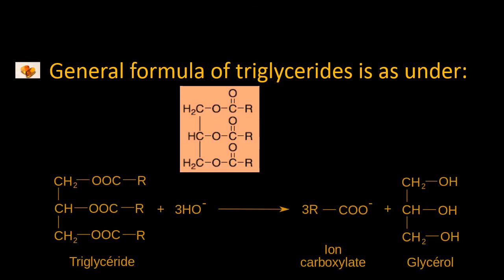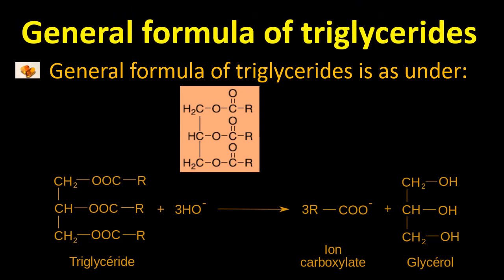The general formula for triglycerides consists of glycerol and carboxylate ions joined together. In this formula, carbon forms a bond with –COOR groups. By removing a hydroxyl group from glycerol and joining it with carboxylate, we get a triglyceride.